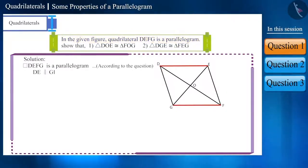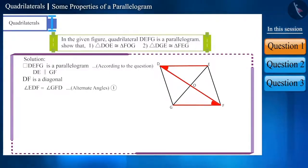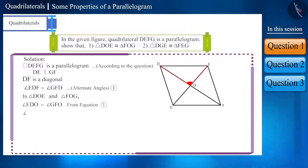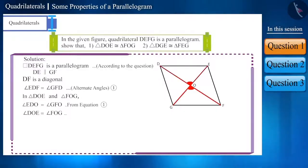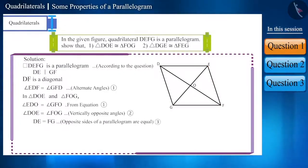Therefore, sides DE and GF will be parallel. If we consider DF a diagonal, then angle EDF and angle GFD will be alternate angles. We know that alternate angles are equal. So in triangles DOE and FOG, angles EDO and GFO are equal. Angle DOE and angle FOG will be equal because both are vertically opposite angles. We know that opposite sides of a parallelogram are equal, therefore sides DE and FG will be equal.